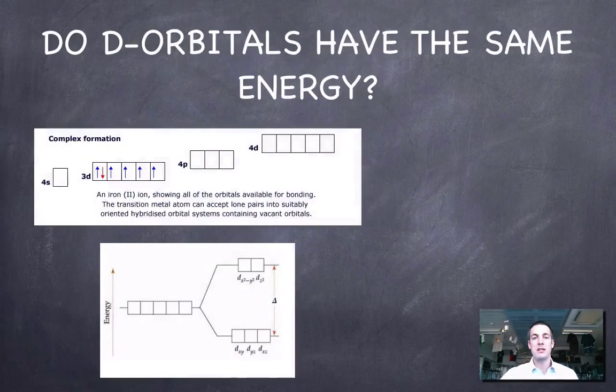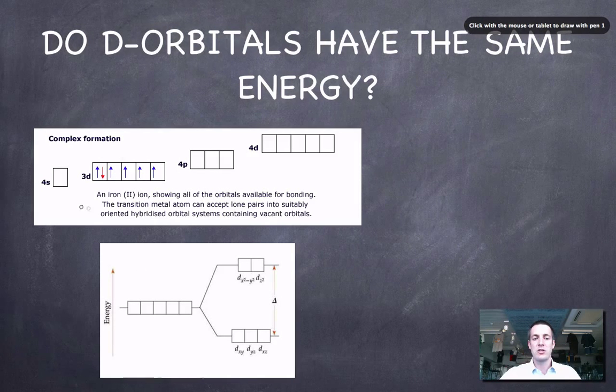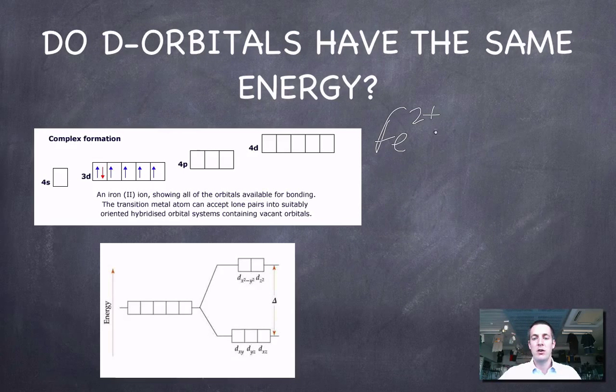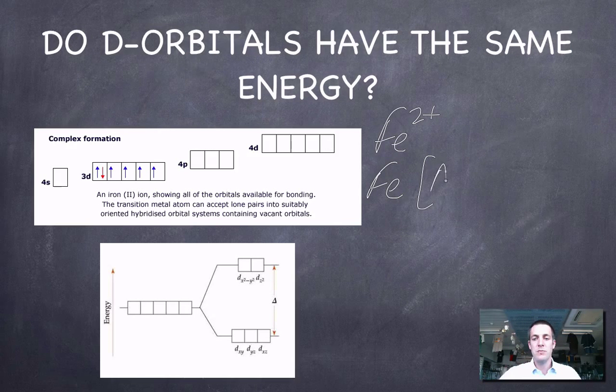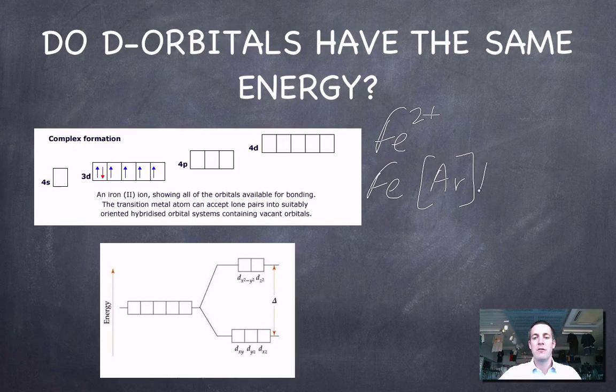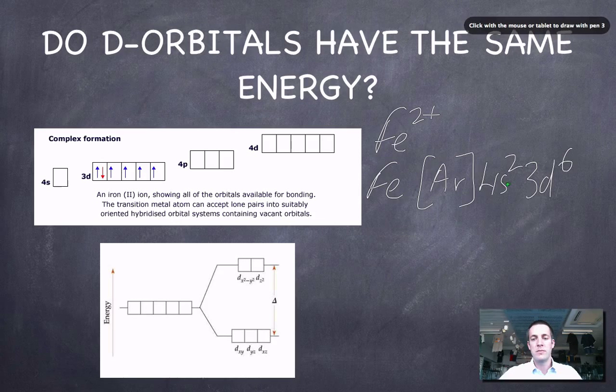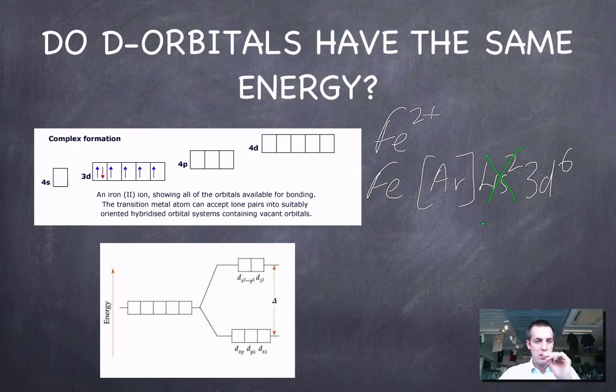That might sound a little bit obscure at the moment, so let's try and illustrate it more clearly. This electron configuration that's been drawn here is for an Fe2+ ion. Now hopefully you can figure out that ion has an electron configuration of argon in square brackets, and then 4s2, 3d6. So when iron forms a 2+ ion and it loses these two electrons, we can see that this is going to be its electron configuration.